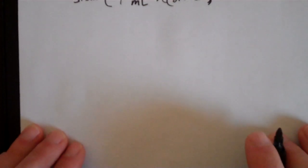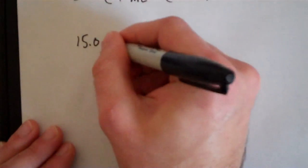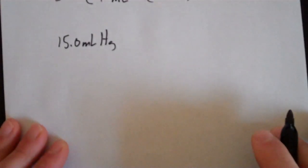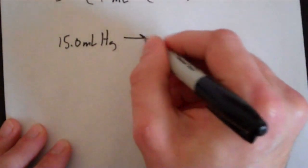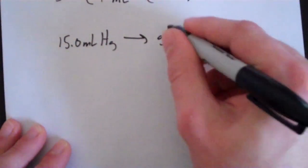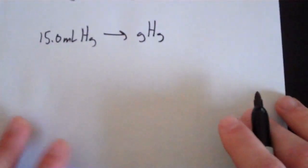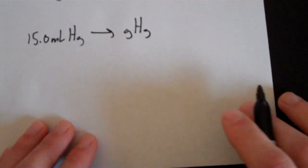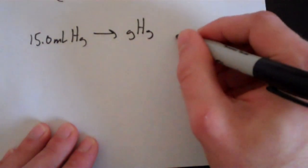All right, let's do one more real quick. How about 15.0 milliliters of mercury and we want to convert that into grams of mercury. Now, we need to know here that the density of mercury, which is the mass per volume of mercury, which is a constant for mercury, is 13.5 grams per milliliter.